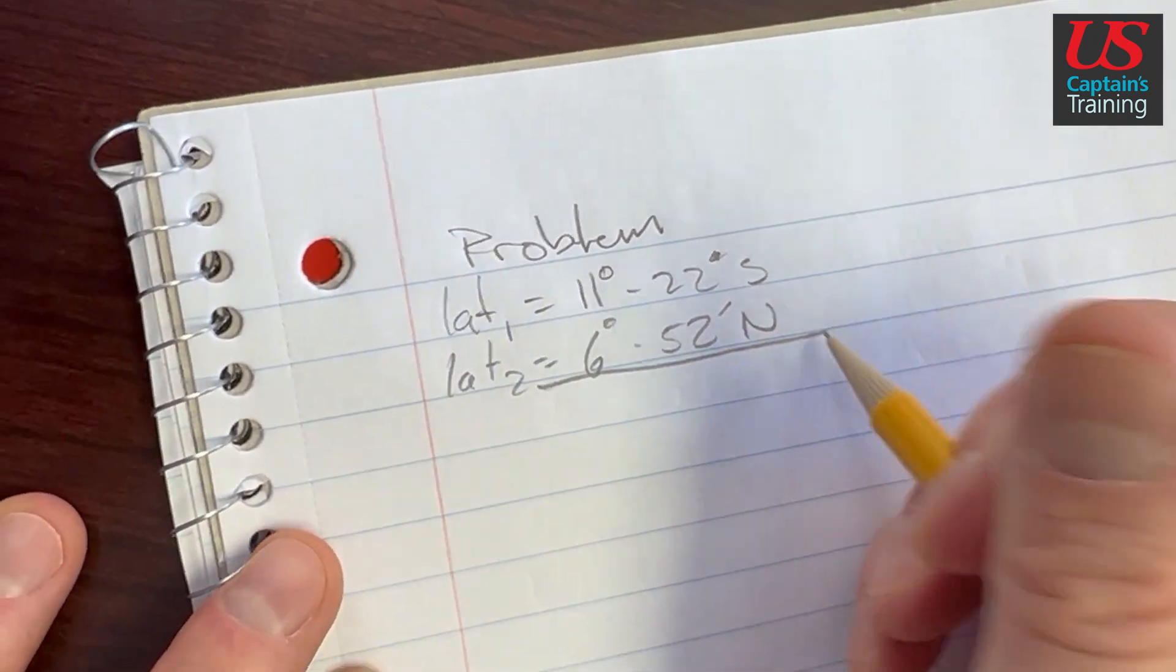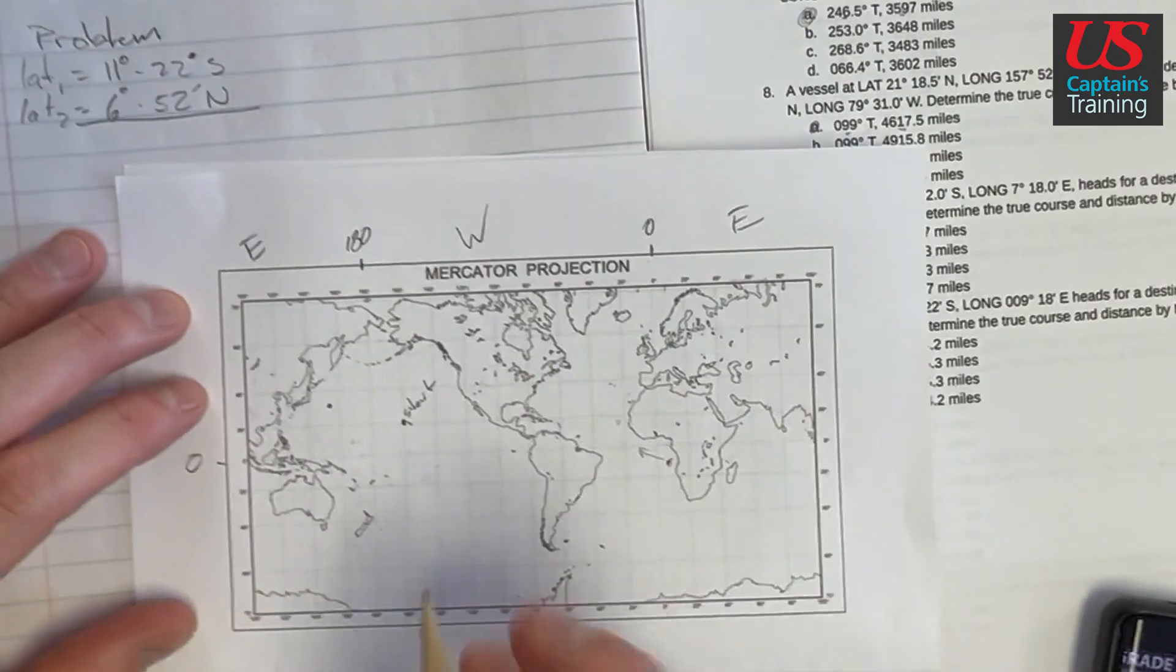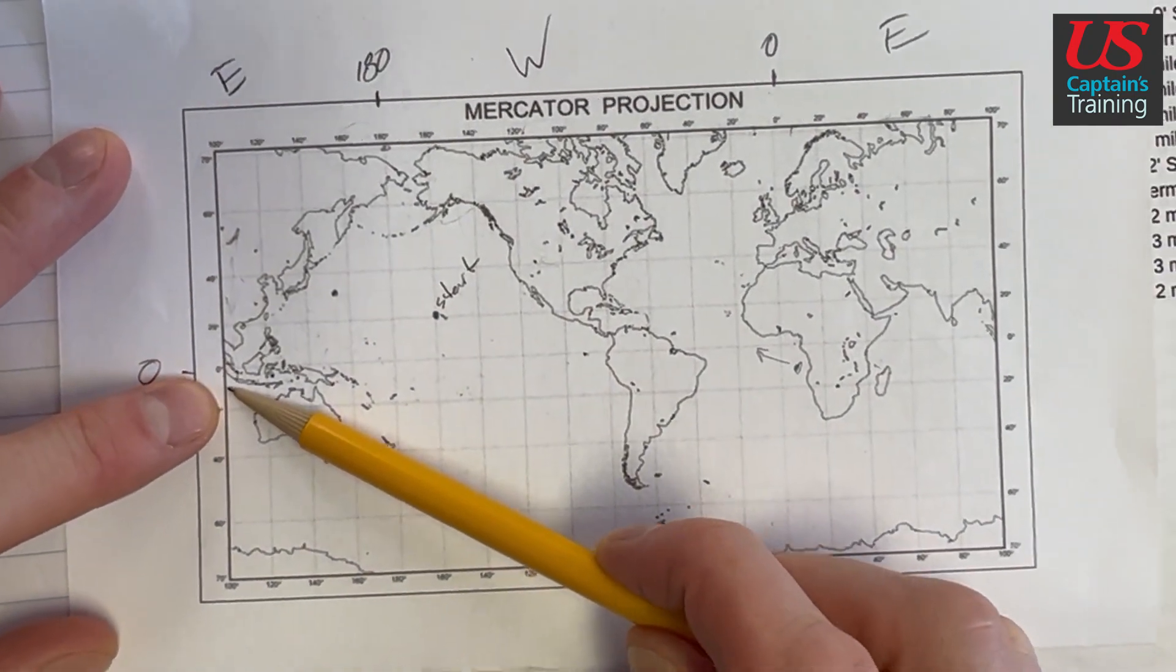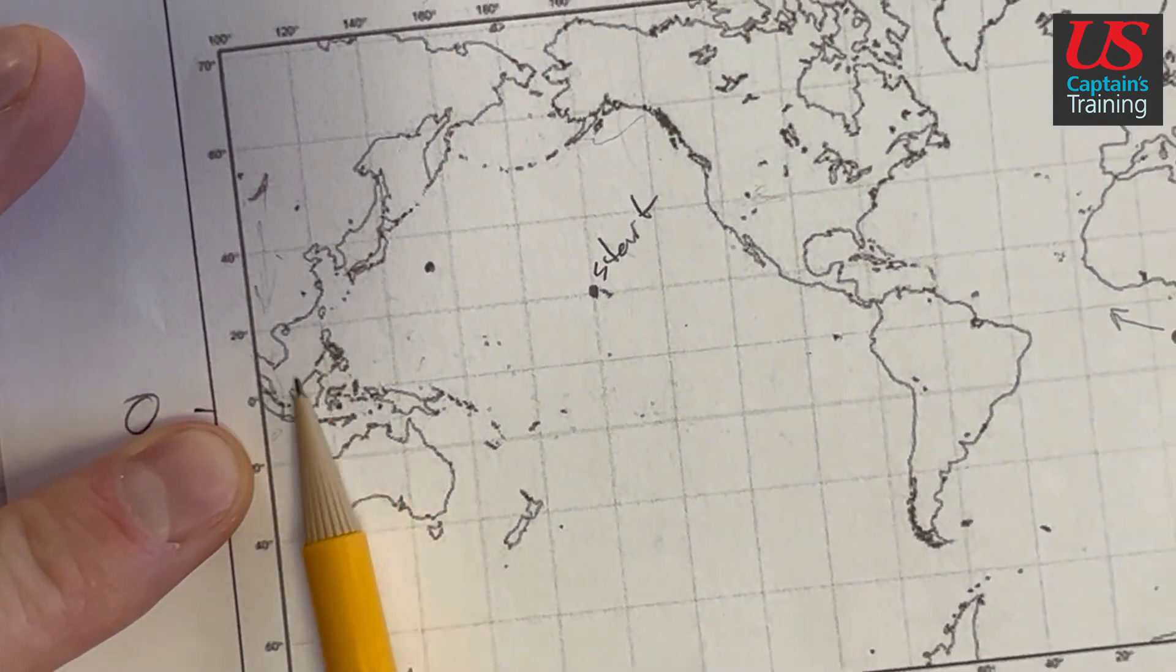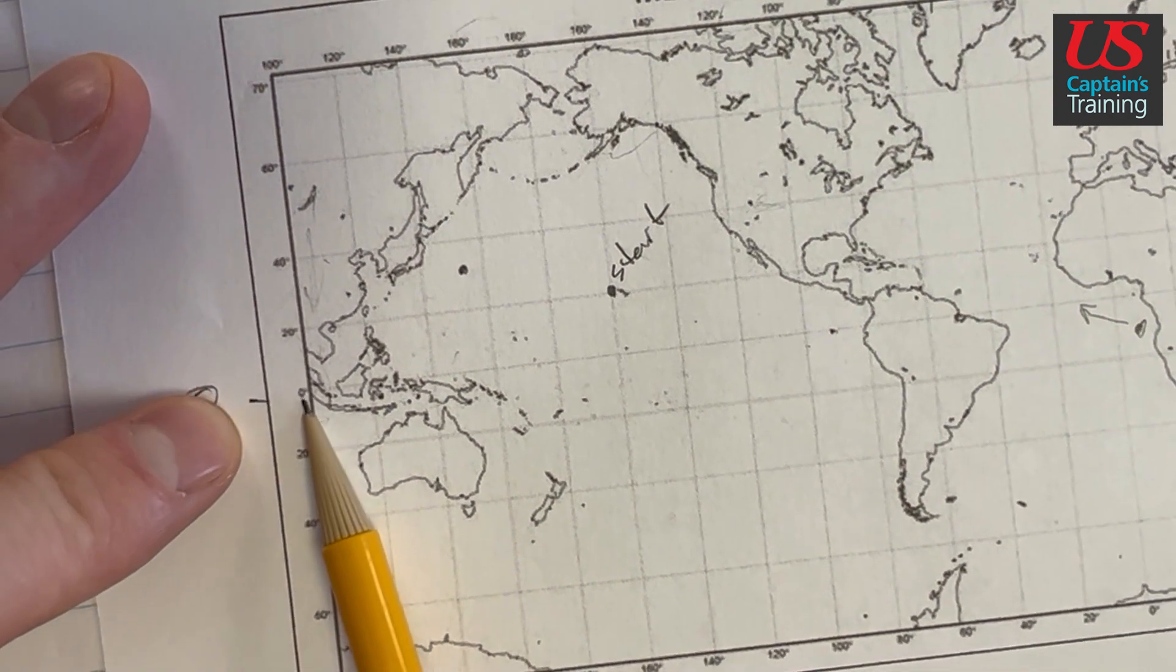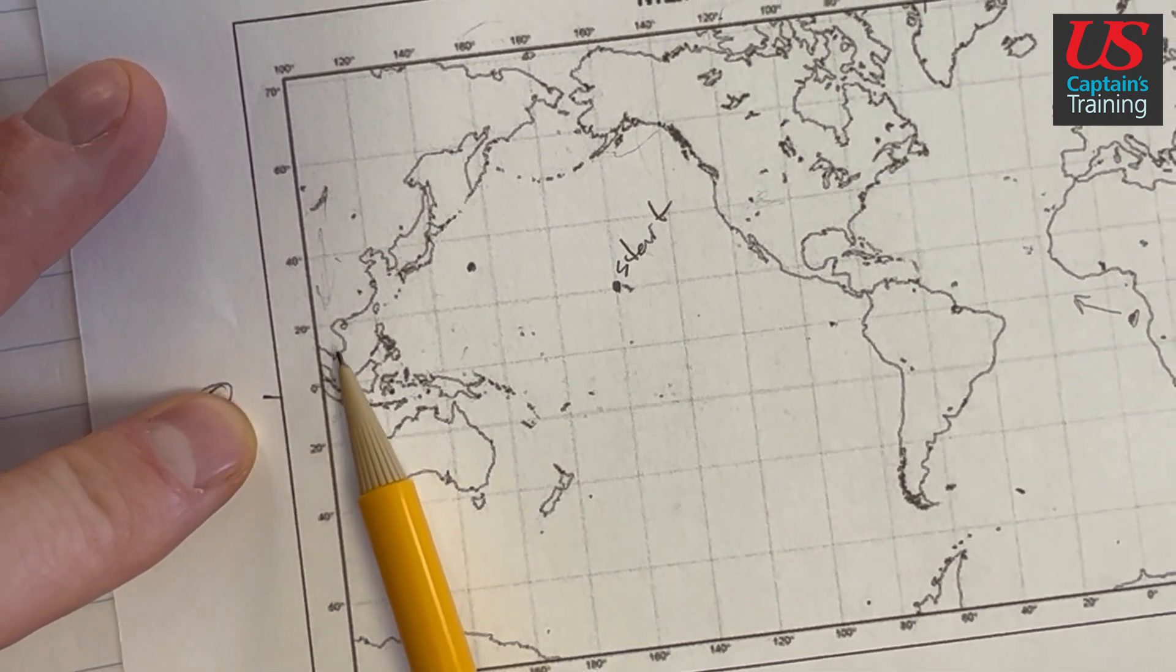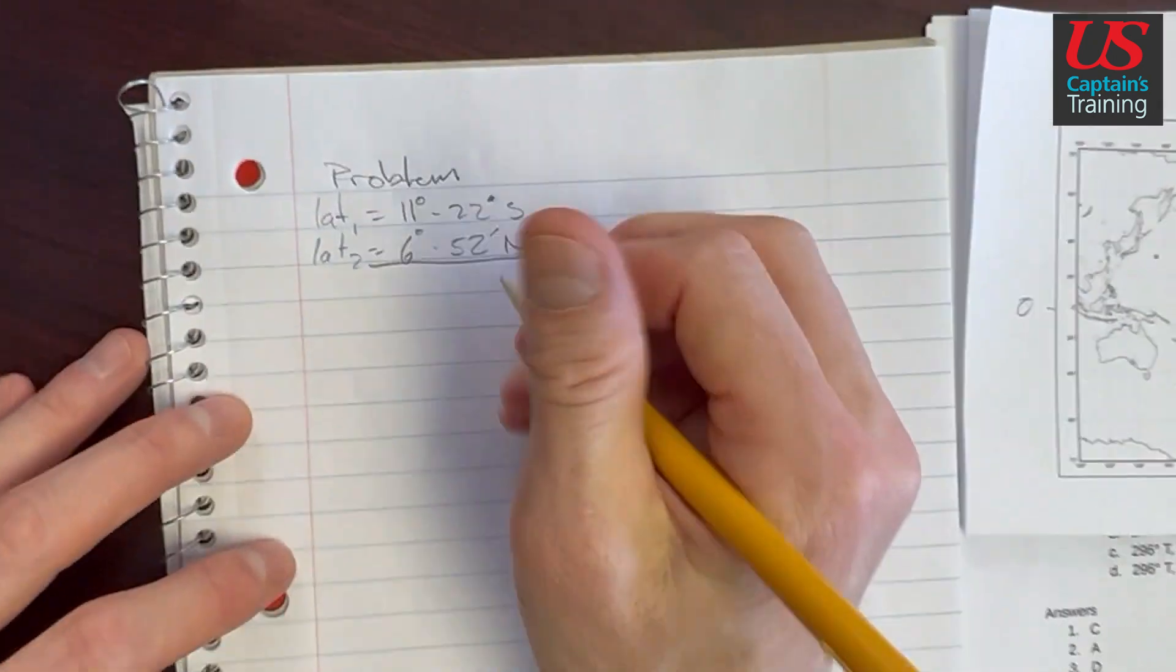Now we have to figure out which way we're going. It looks in this case like we crossed the equator. So we went from 11 south, which is down here, we went to 6 north. So we were headed north and we crossed the equator, which is zero. So we counted down to zero and then back up.